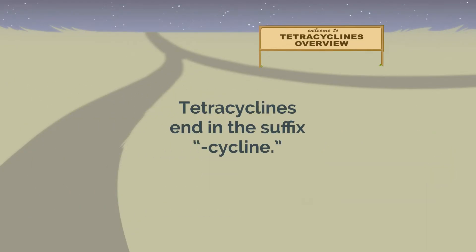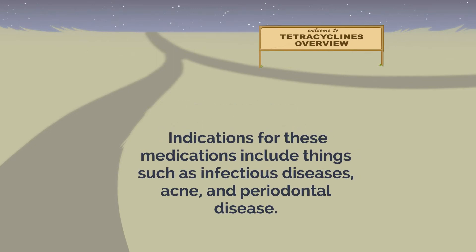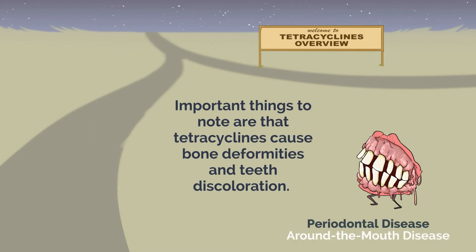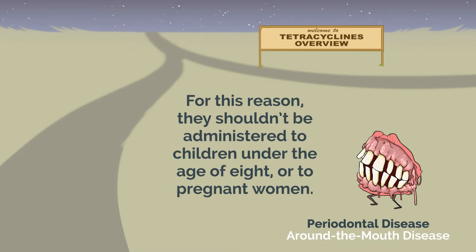Tetracyclines end in the suffix -cycline. Indications for these medications include infectious diseases, acne, and periodontal disease. A commonly tested education point to remember is that they should not be given with milk, antacids, or iron. Importantly, tetracyclines cause bone deformities and teeth discoloration, so they shouldn't be administered to children under the age of eight or to pregnant women.